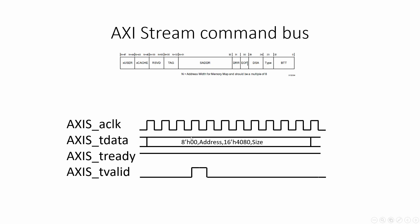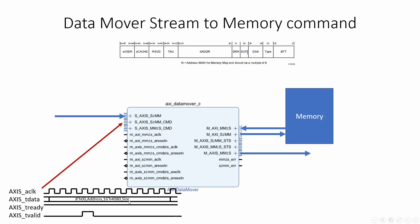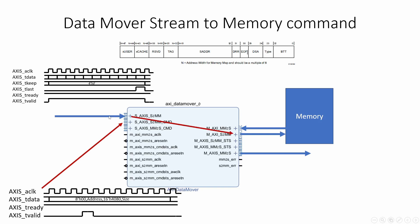Because the AXI stream bus has no address or size, we need to give a command for the address, size, and some control bits. The data mover will receive this command, which gives it the address and the size, and then it can transfer the data chunk from the AXI stream bus to the regular AXI bus and to the DDR.